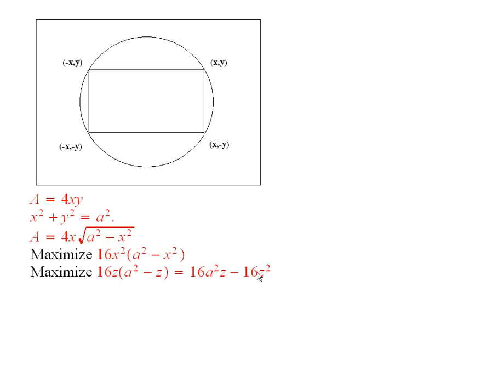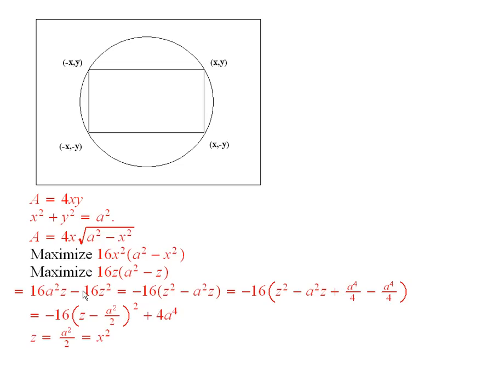So if I multiply it out, I get this. How do we go about maximizing something like that? We complete the square. So that's what I've done here. I factored out a minus 16, and then I have a z squared minus a squared z here, and then we have to complete the square on the inside.